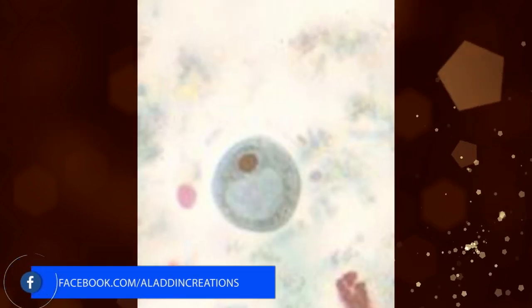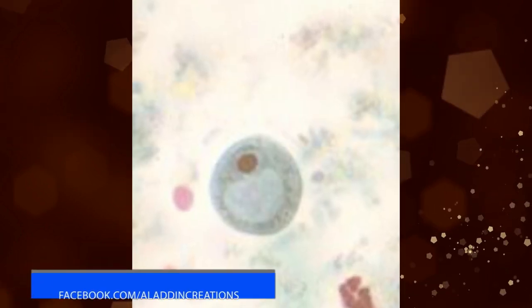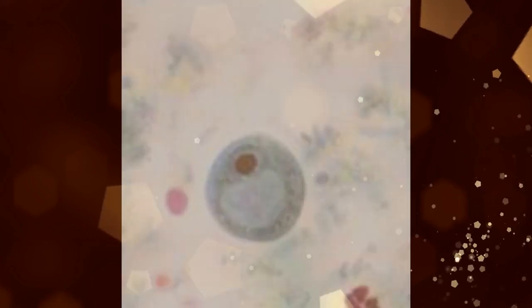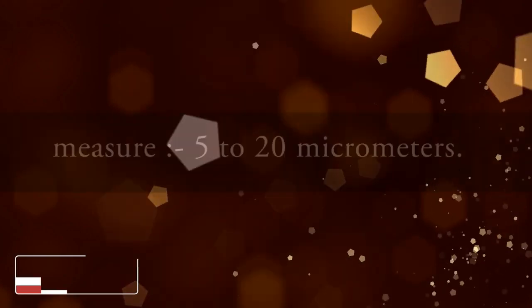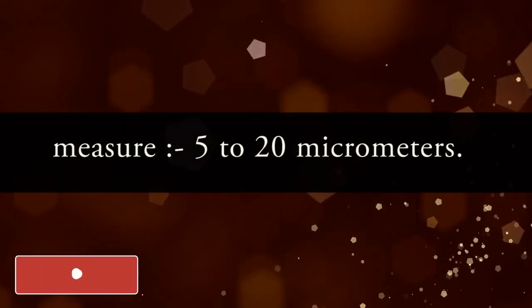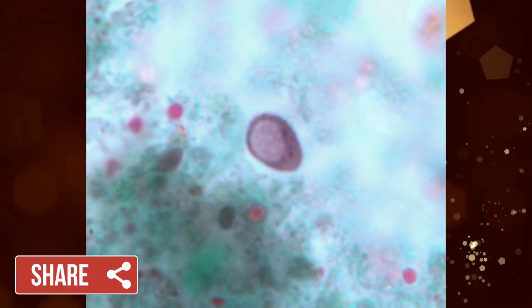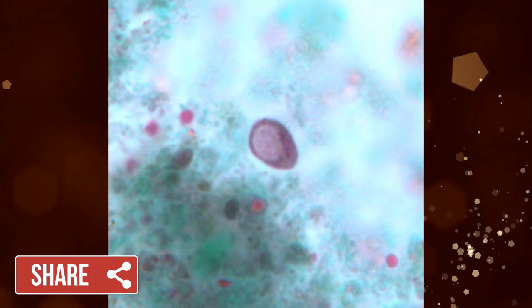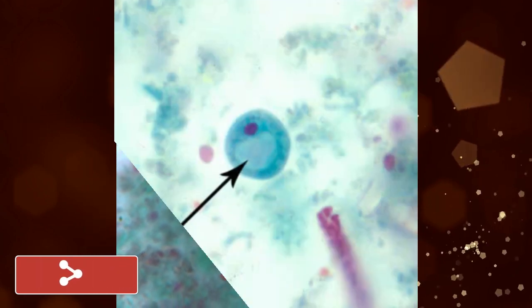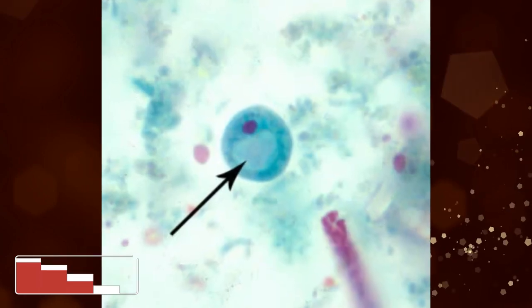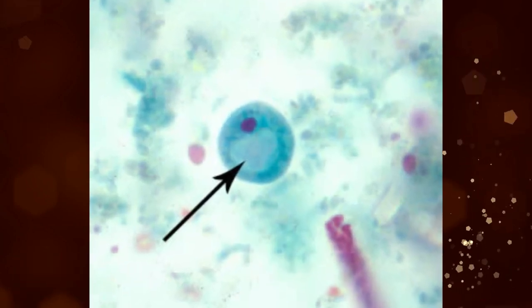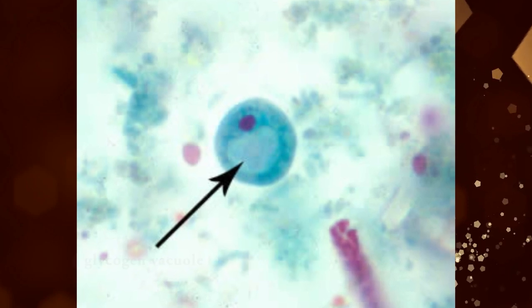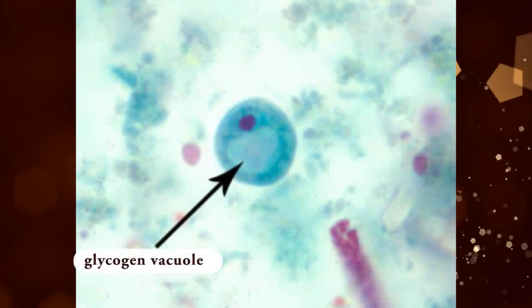Cysts of Iodamoeba butchlyii vary from being nearly spherical to ellipsoidal, and measure 5 to 20 micrometers. An important diagnostic feature for this species is the presence of a large compact mass vacuole of glycogen in the cyst stage.